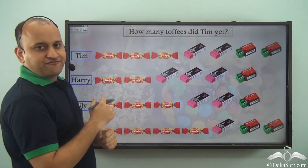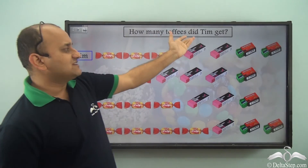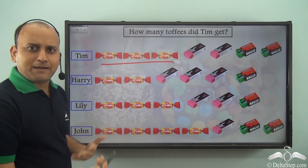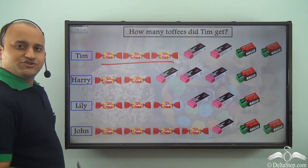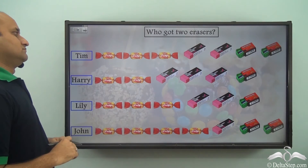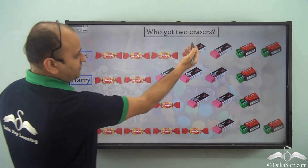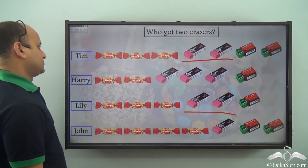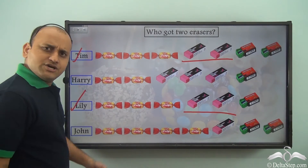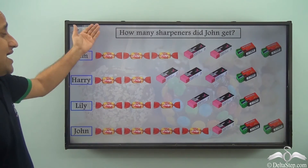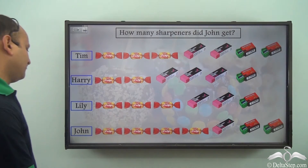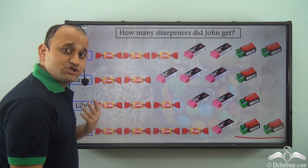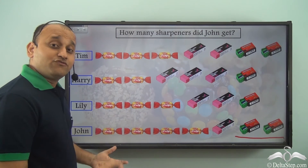Now, using this pictograph, can you find how many toffees Tim got? It's very easy — Tim got three toffees. Who got two erasers? Looking at the pictures of erasers, Tim got two erasers and Lily also got two erasers. How many sharpeners did John get? John got two sharpeners. It's very easy to find information this way.